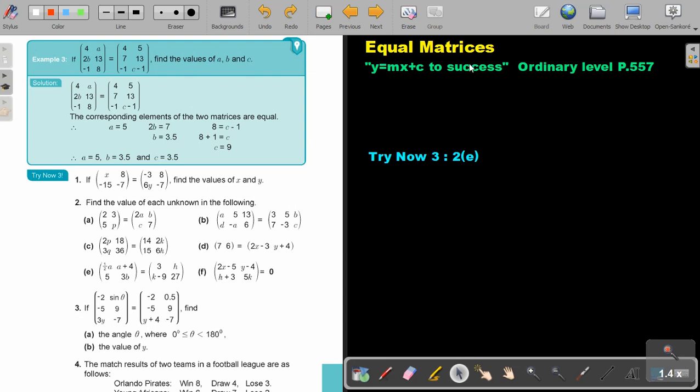Equal matrices. You will find this on page 557 in the Namibia Ordinary Level Mathematics textbook, Y equals MX plus C to success. Let's look at an example.